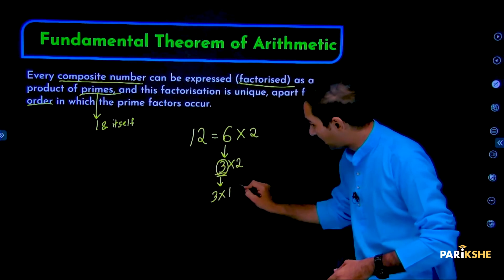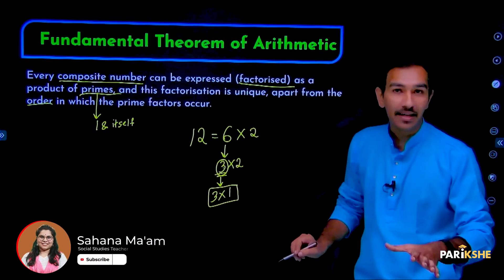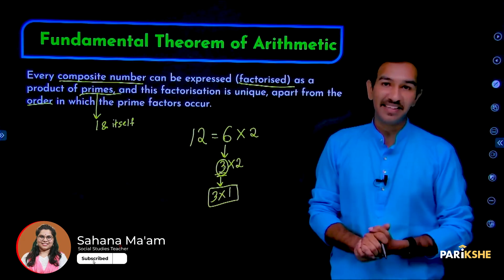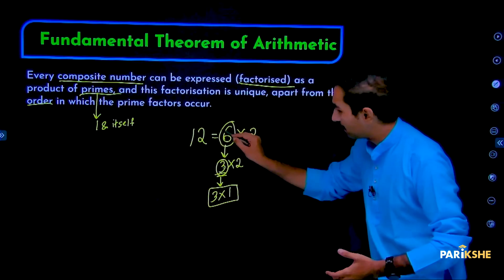So these are prime numbers. Prime numbers are those which have only two factors: 1 and itself. For example, to express 3, we can only write 3 into 1. These numbers with only 1 and itself as factors are prime numbers. Numbers like 6 and 12 are composite numbers.